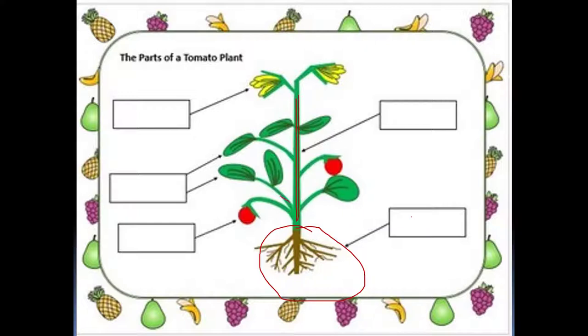The second part that grows above the soil is called stem. Then we have branches, leaves, flowers, and fruits.